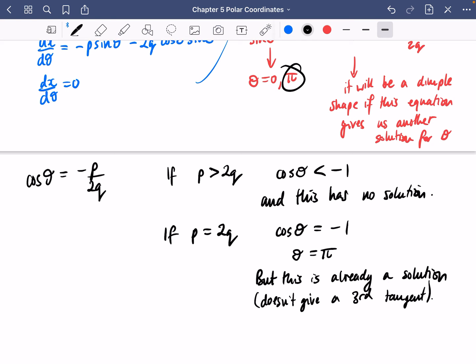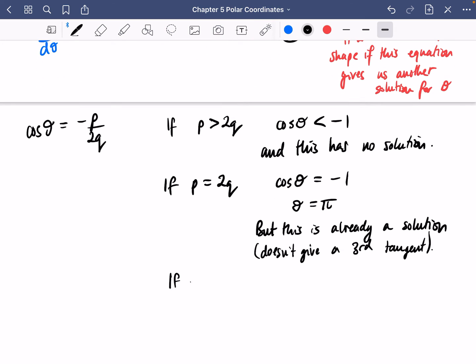And so our last one to check is if p is less than 2q. Well, if p is less than 2q, then we get here that cos θ is going to be greater than minus one. And actually, it's also going to be less than 1 in this particular case, in which case this produces an extra pair of solutions corresponding to the third tangent.